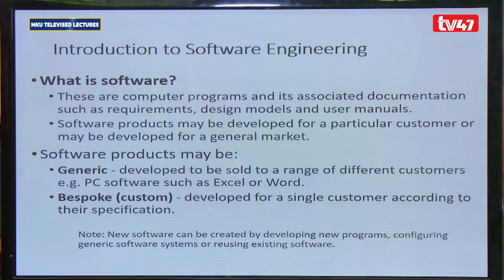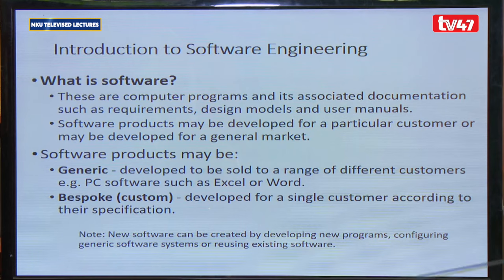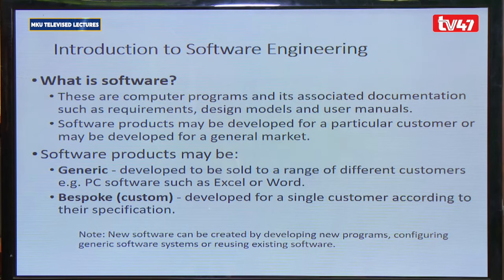The first term to define is software. Software is basically a set of computer programs and its associated documentation such as requirements, design models, and user manuals. Software products may be developed for a particular customer or for a general market, and they may be of two types: generic software and bespoke or custom software.